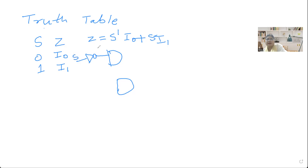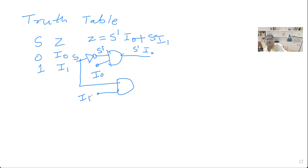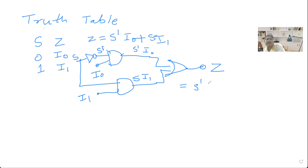Let this be the value S, and after taking the complement this becomes S-dash. The output of the first AND gate is S-dash times I0. Now I want to make the logic diagram for the second term, S times I1, connecting S and I1 to the second AND gate giving output S·I1. Both of these outputs are then connected with an OR gate, giving Z equals S-dash·I0 plus S·I1.